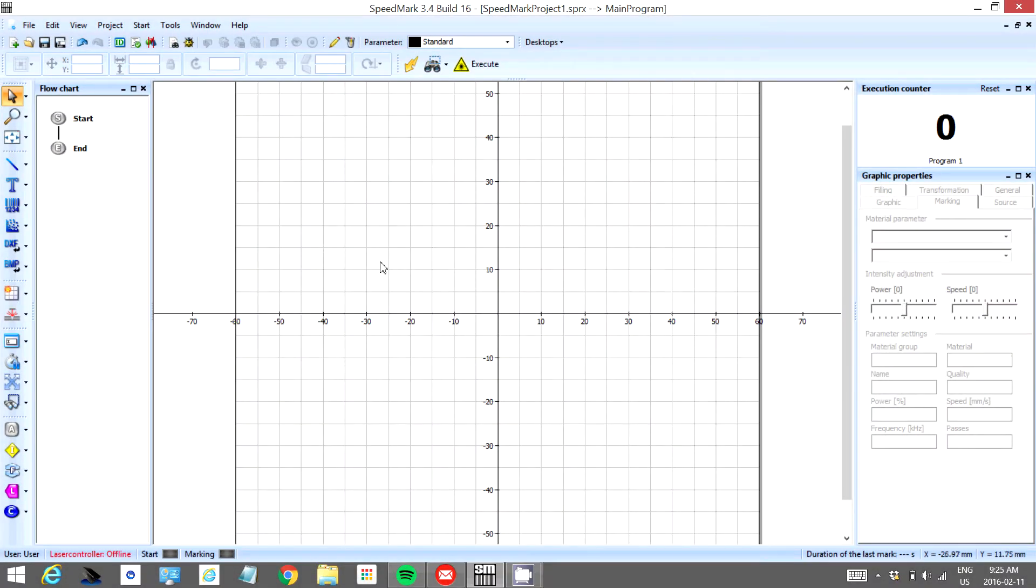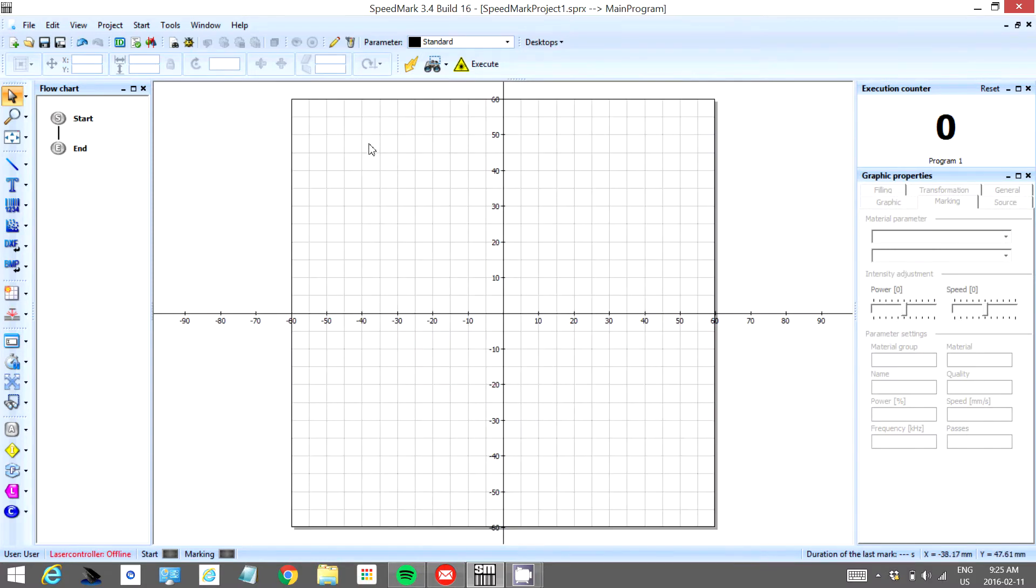Here we are in Speedmark and we have our program listed right here. This here is our lazing surface where we can apply our objects. This program here has a start and an end. Right now the program is very simple. It starts and it ends.